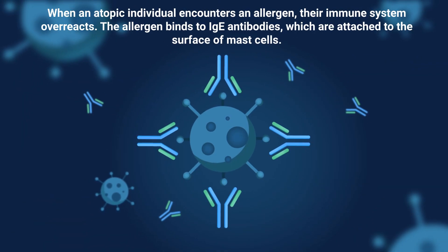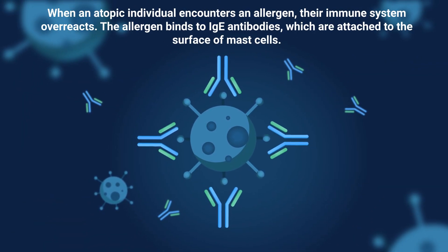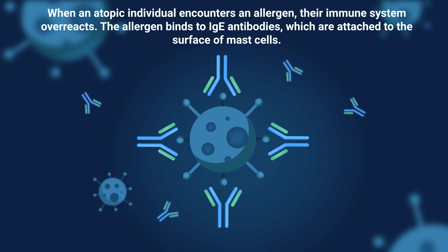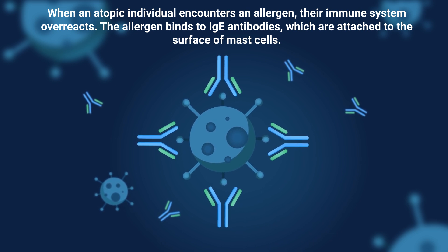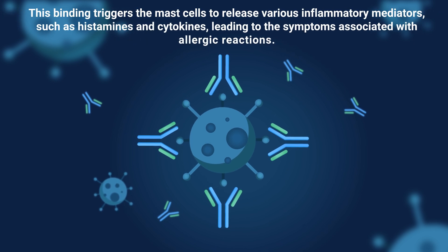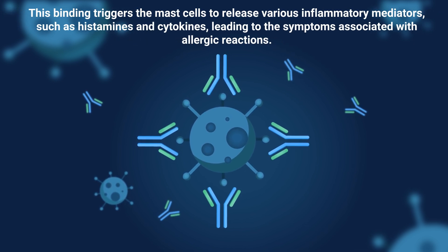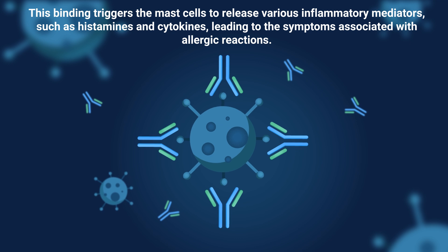When an atopic individual encounters an allergen, their immune system overreacts. The allergen binds to IgE antibodies which are attached to the surface of mast cells. This binding triggers the mast cells to release various inflammatory mediators such as histamines and cytokines.